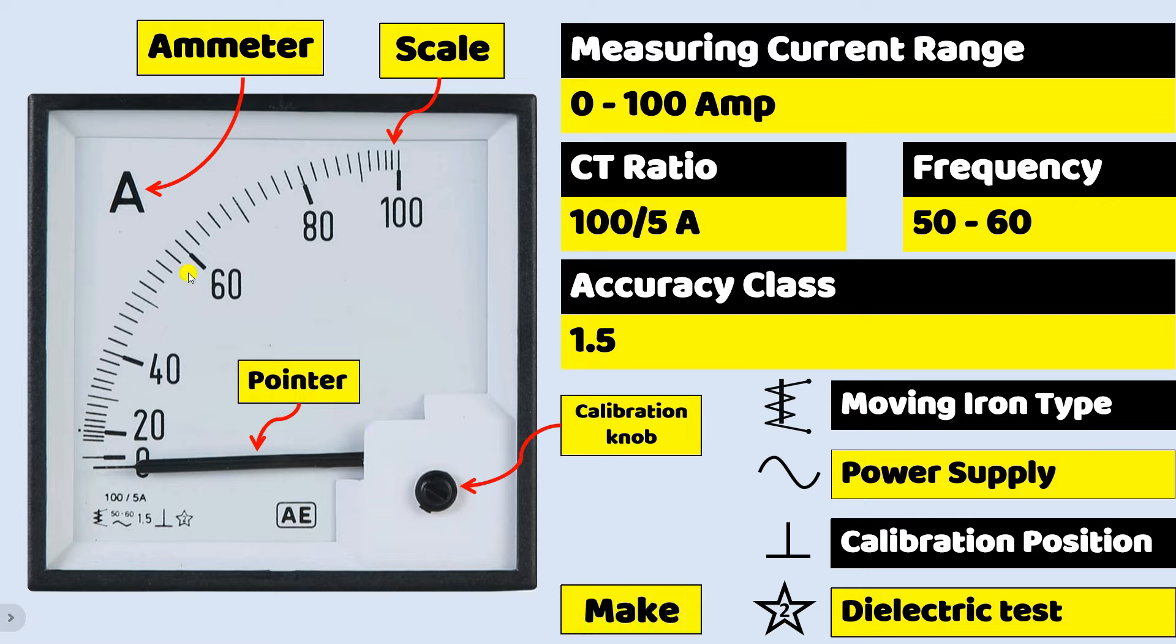You can see a logo here on this ammeter. This is the company's logo. It means this is the logo of the company through which this ammeter is made. That's it friends, I have explained all the details of ammeter. If you like this video, please do like it. If you haven't subscribed my channel yet, please subscribe. Thanks for watching this video.